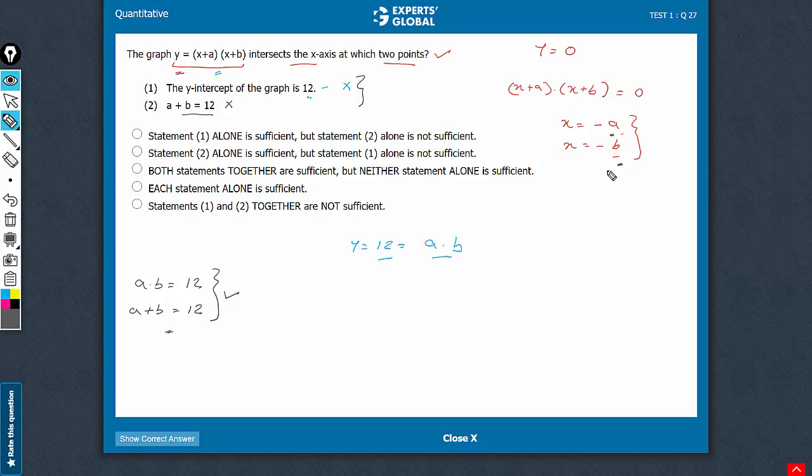So determining the two points at which this graph intersects the x-axis is possible and this became possible when the two equations were used together. We could reach a unique answer. C is the correct answer choice.